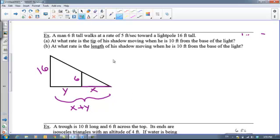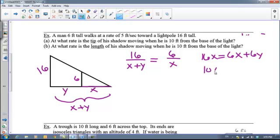And I'm going to call this Y and then this whole distance here is X plus Y. And so setting up our similar triangles, I will get that 16 over X plus Y equals 6 over X. And when we cross multiply, we get that 16X equals 6X plus 6Y. So 10X equals 6Y. So X equals 3 fifths Y by dividing both sides by 10.